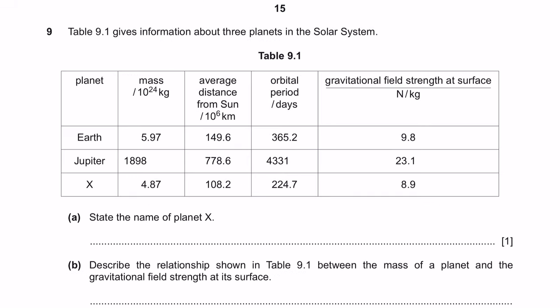Question 9. Table 9.1 gives information about three planets in the solar system. Earth, Jupiter and Anon. Question A. State the name of planet X. Okay, we can find this out by looking at the average distance from the sun. So, X has a shorter distance compared to the earth from the sun. So, we know that from the sun, it's Mercury, Venus and then Earth. So, this planet here must be Venus.